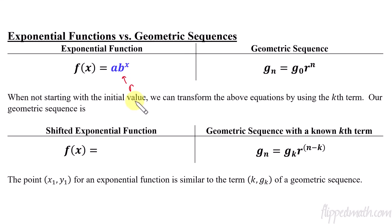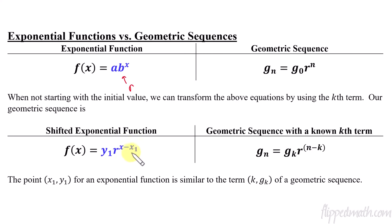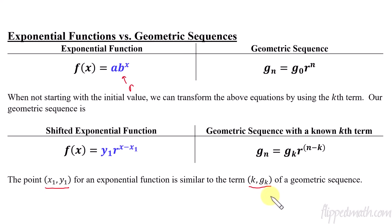When we don't have our initial value and we're going to shift it, then it would look like this where we have the kth term. What does that look like for exponential functions? It would be this where we have a coordinate point — some x minus x1 — and in front, instead of the initial value, we put the y value of whichever coordinate point we're working with. So x1, y1 for an exponential function is very similar to the k, g_sub_k term for a geometric sequence — the point for an exponential function is similar to the term for a geometric sequence.